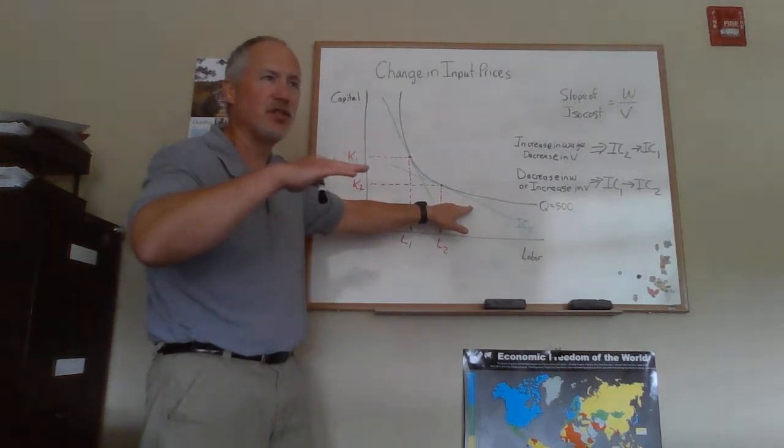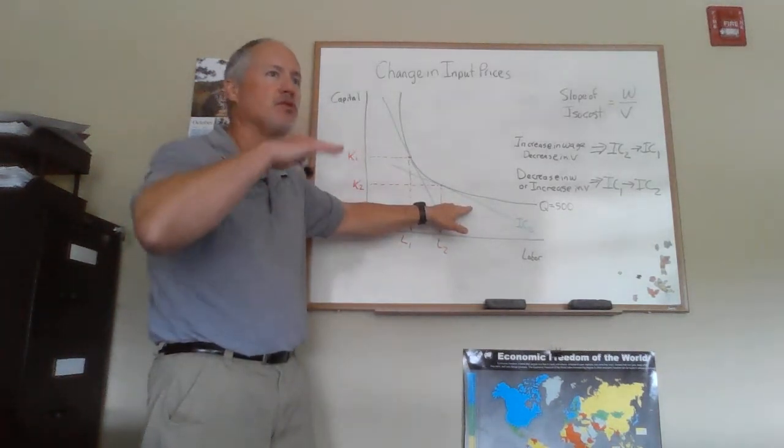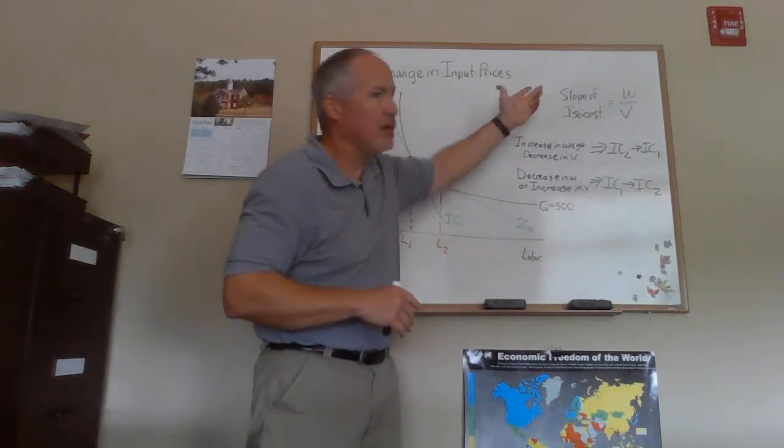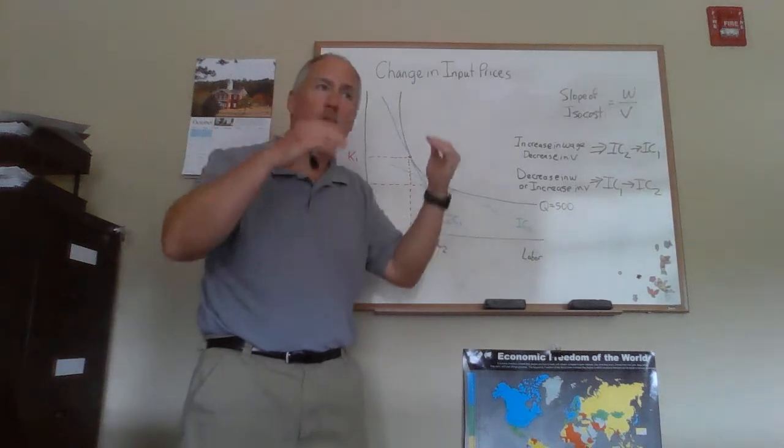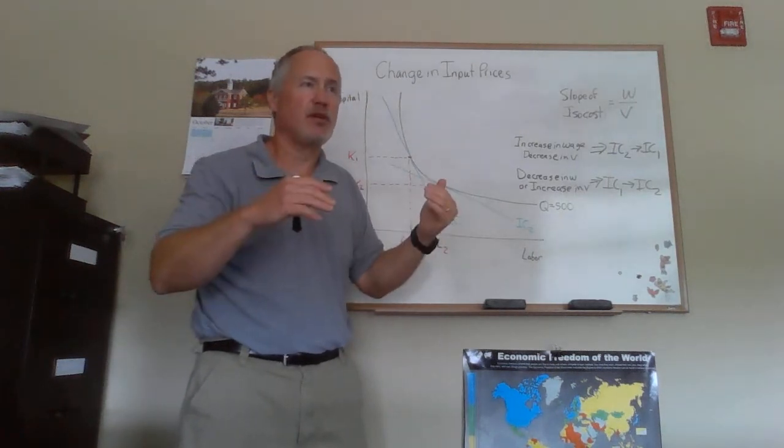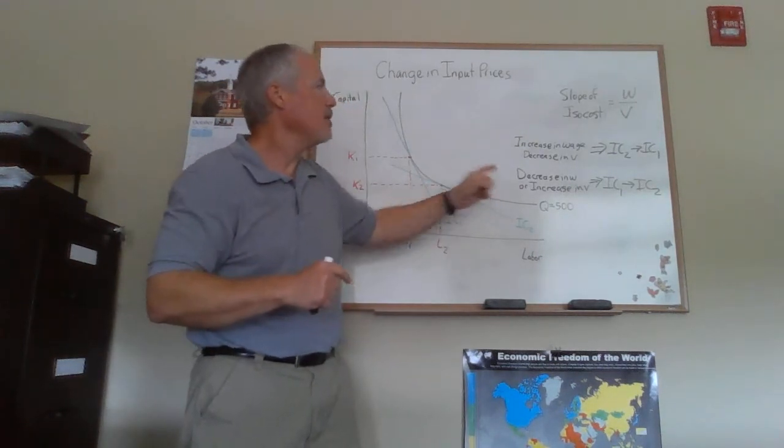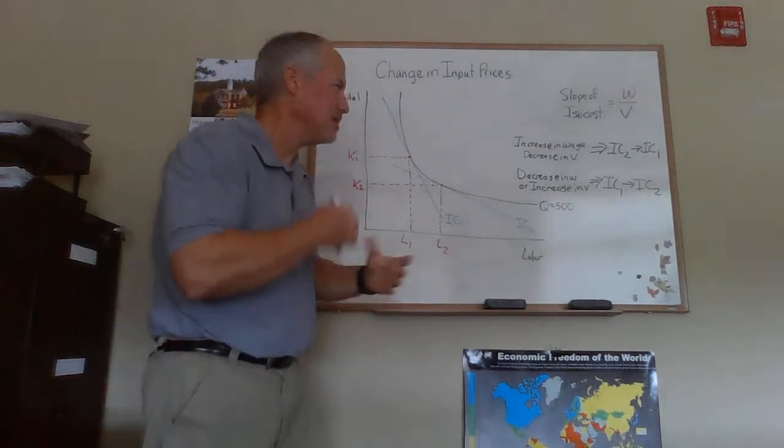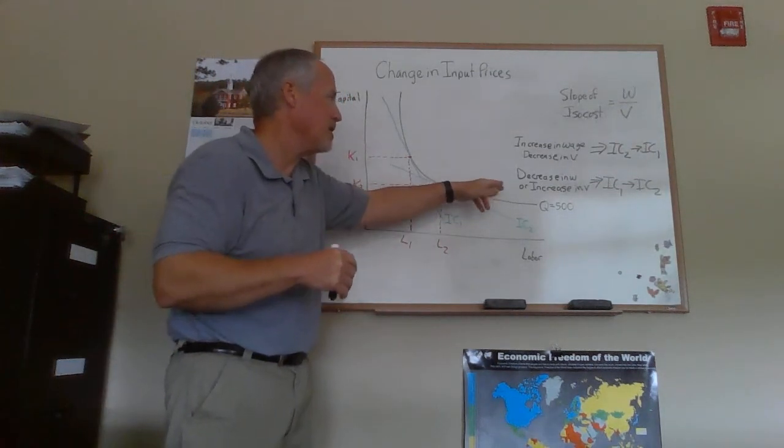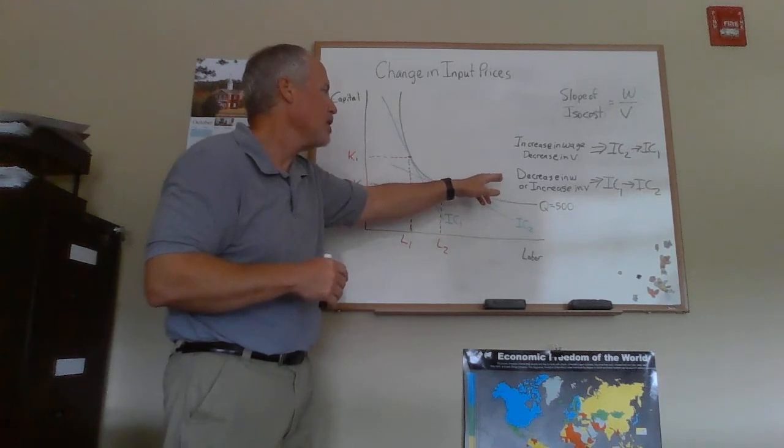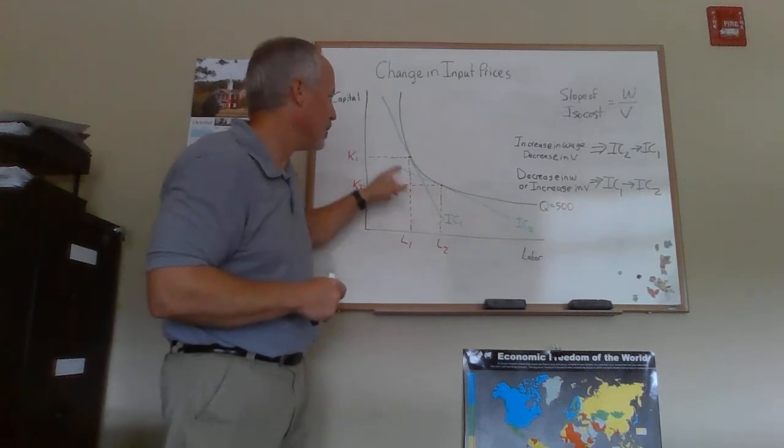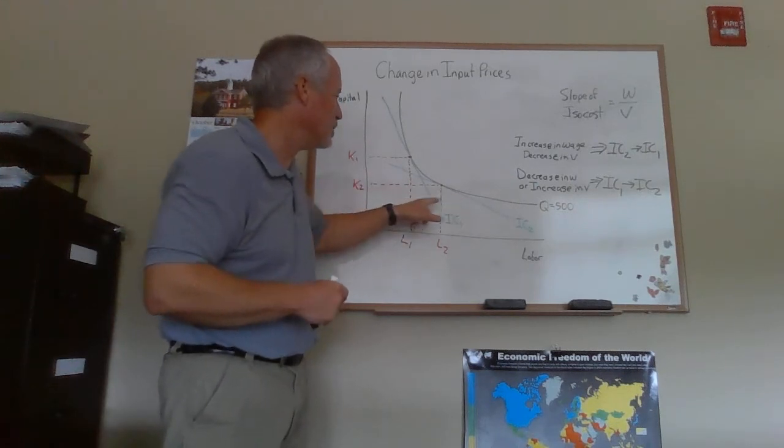IC1 to IC2 would be the shift when the isocost becomes flatter. What's going to make the isocost flatter? Well, again with wage in the numerator, if the wage goes down that ratio gets smaller, or if the price of capital goes up, the denominator gets bigger and that'll make the ratio smaller. So a decrease in the wage or an increase in the price of capital would cause a shift from IC1 to IC2.